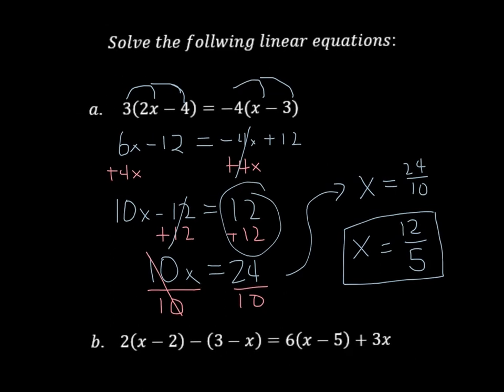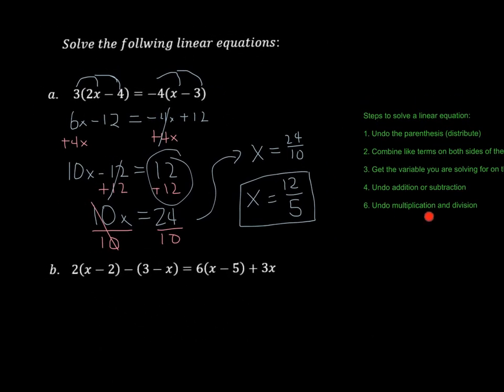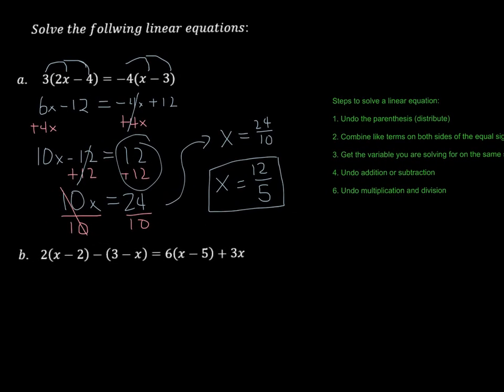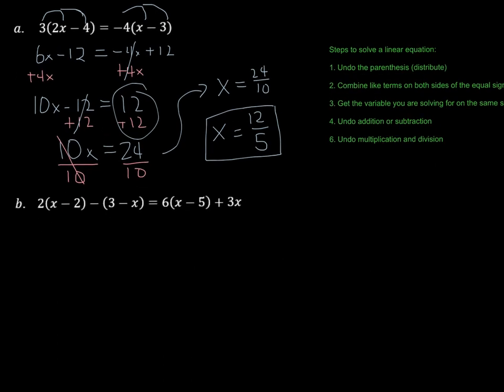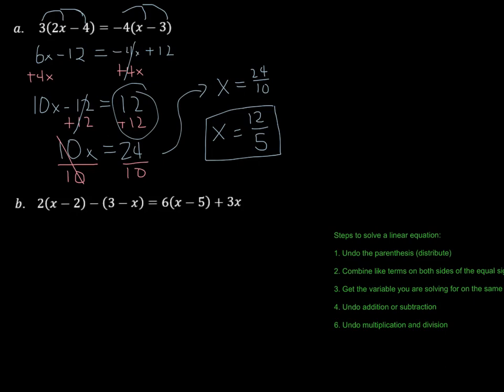Now, I want to go ahead and zoom out a little bit and just kind of show you the steps to solve a linear equation. So if you take a look right over here, you see that I've got those written out over here, and I followed all those steps. First thing we did was we undid the parentheses by distributing. There wasn't any combining like terms necessary, so then we got the variable on the same side, and then we added 12, that's undoing addition or subtraction. And then we undid the division by dividing both sides by 10. So we're going to follow the same steps. I'm going to bring these steps down here so we can kind of take a look and see what we're doing as we're going through it.